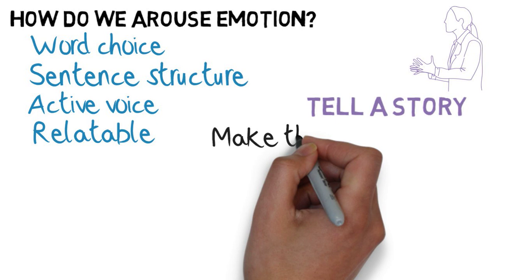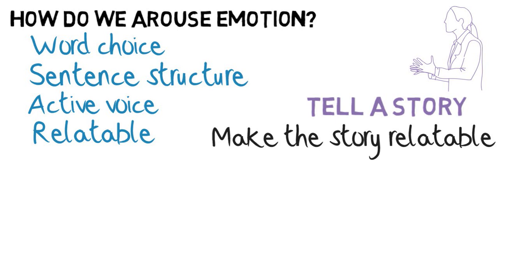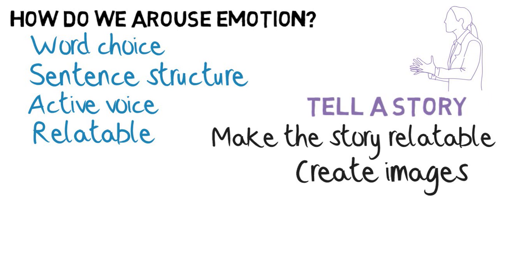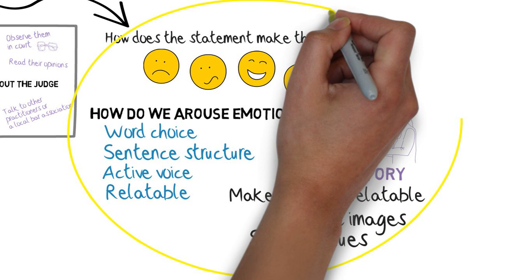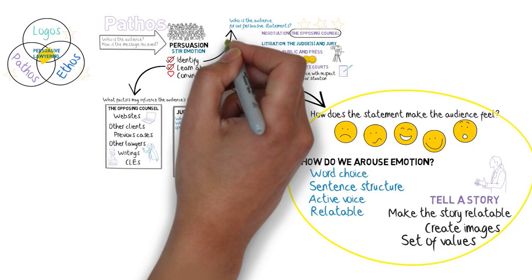One thing we can do is relate the story to something that the listener knows from his or her own world experience — make the client look like the judge or opposing counsel, or whoever it is that you're trying to convince. Another thing is to create images in the mind's eye of the other, so that the listener can see the facts and the story, and it comes alive for them. Or you could relate the story to a set of values that the listener can relate to. These are all tools we have in order to convince the audience to accept our position. That's pathos.